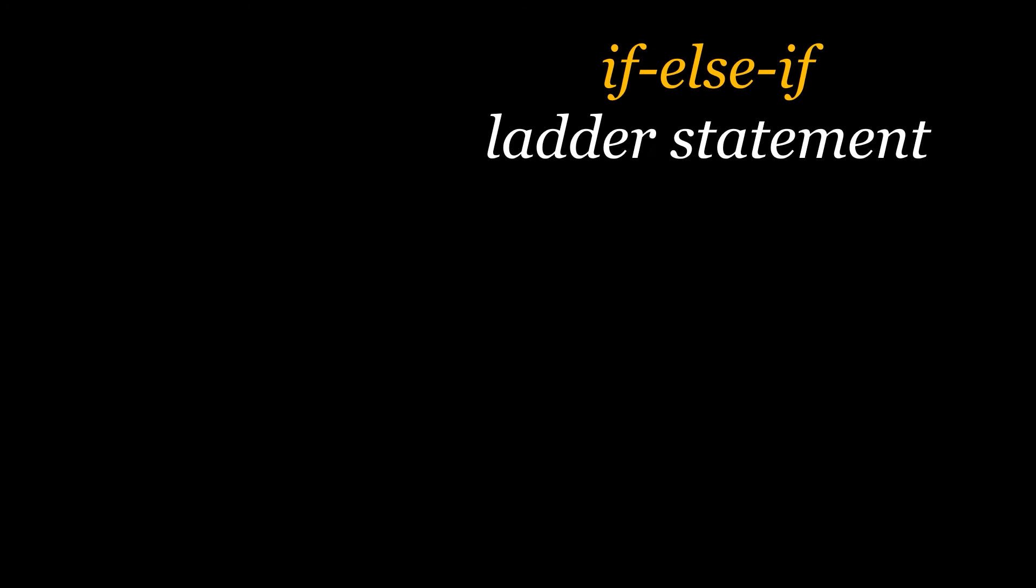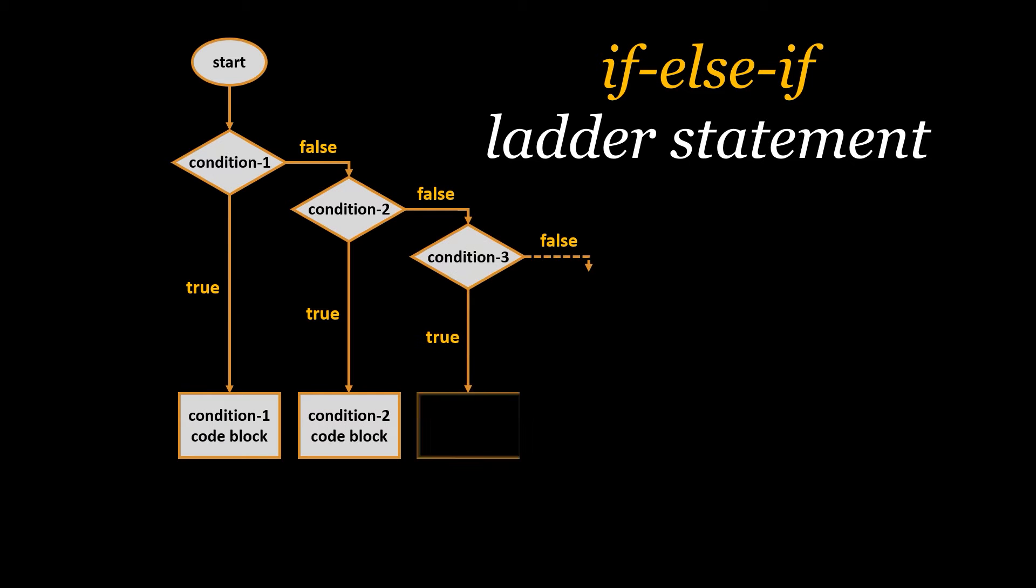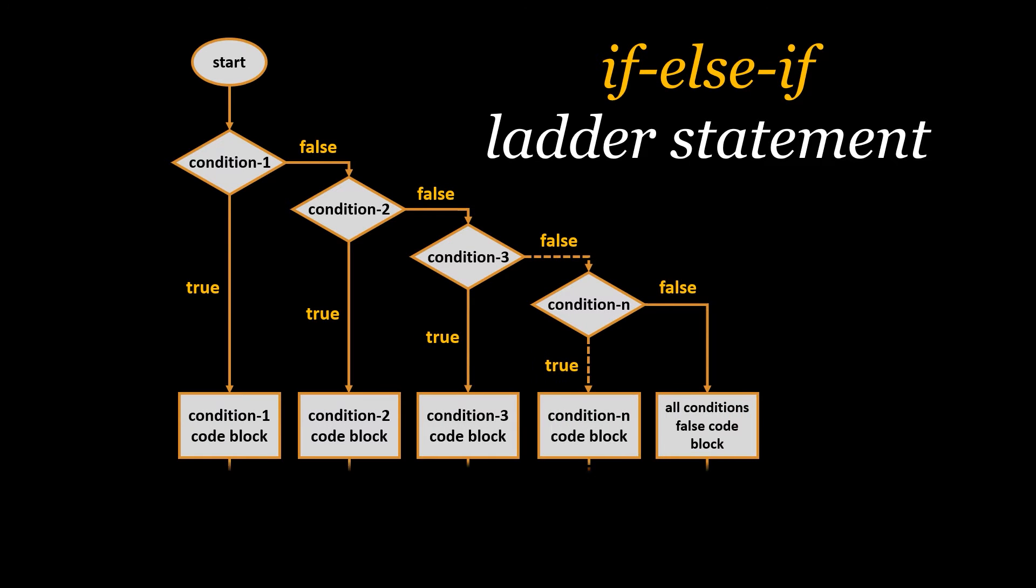The if-else-if ladder statement executes one condition from multiple statements. So it will start by checking the condition in the if statement, and if it is false it will check the condition in the next else-if statement, and so on until one of these conditions is true. If none of the conditions provided is resolved to true, then the code found in the else statement is executed.